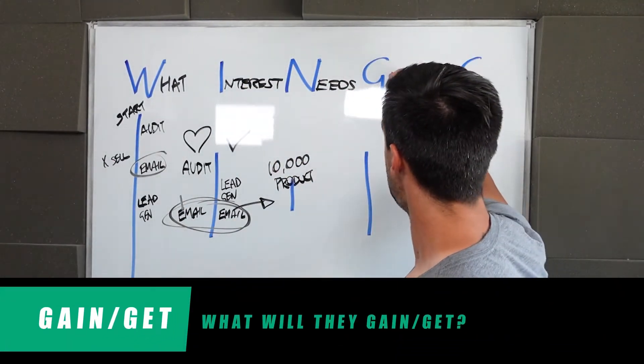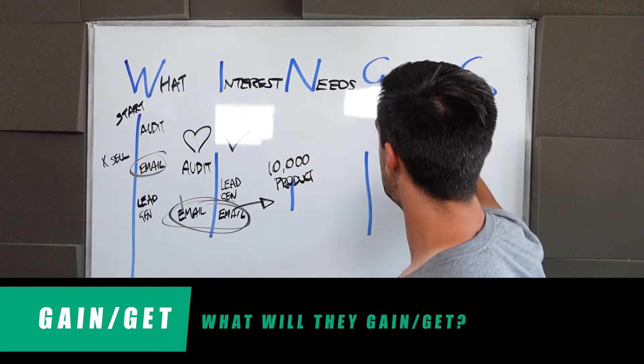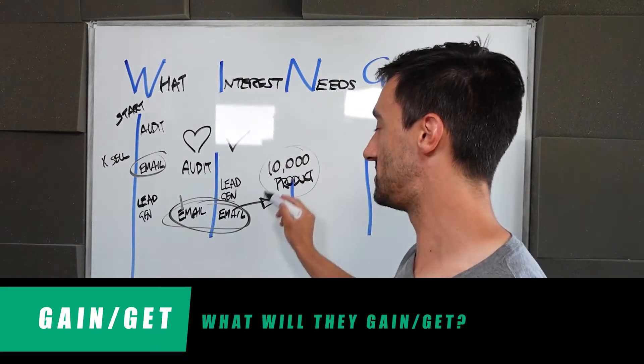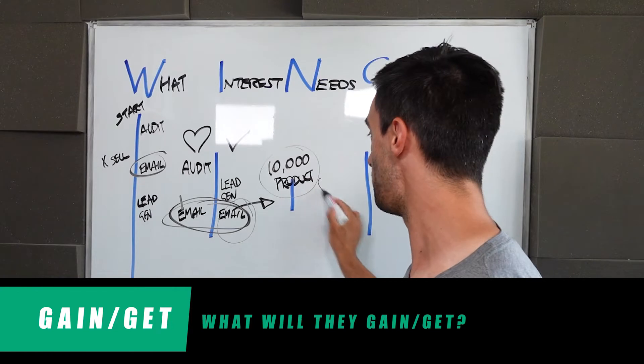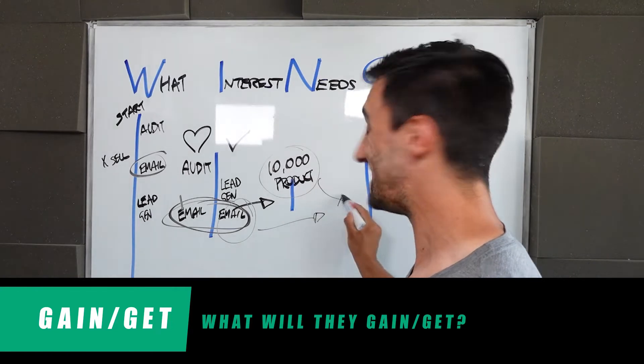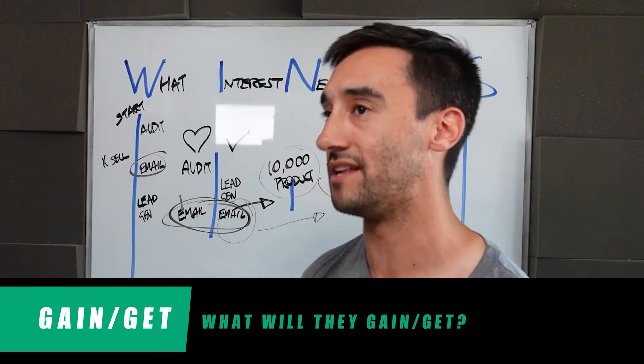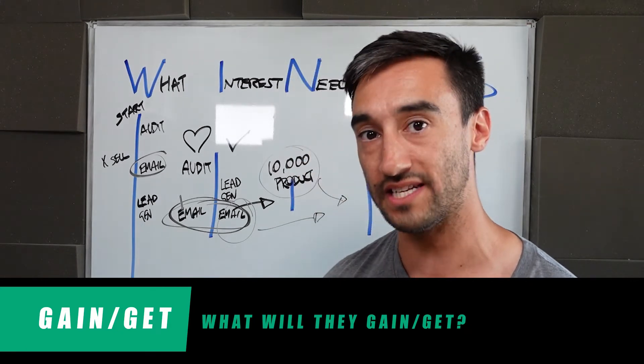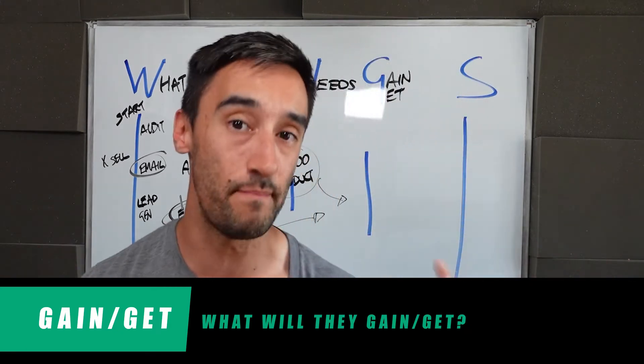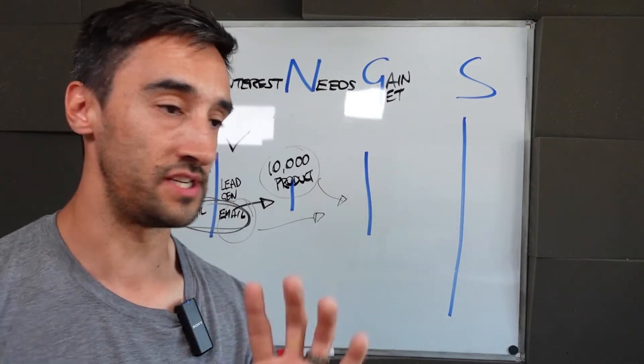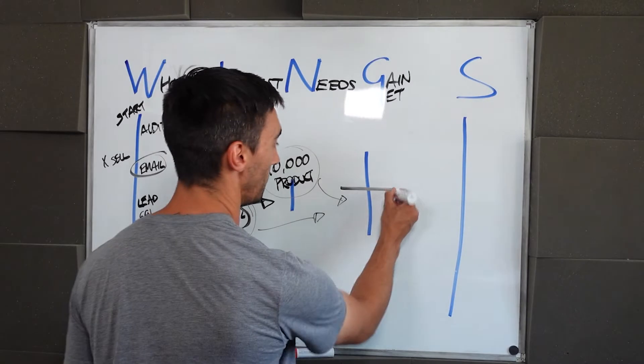So this fourth letter, G, stands for gain or sometimes get. And what I mean by this is if they are this person and you do this thing with them, what do they actually get at the end of it? They don't just get email marketing, they don't gain email marketing, they gain results within their business. What are those results? I want you to think of this in a couple of different categories.